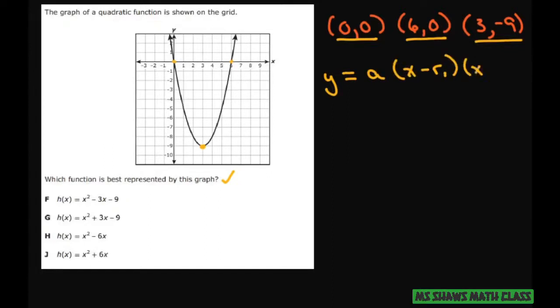And R1 and R2 represent your roots or your solutions or your x-intercepts which are right here. So let's plug those in first. So you have A times x minus 0 and then this one x minus 6. So that's your standard form.